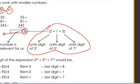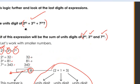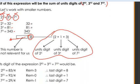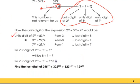Extending this logic to our expression, the units digit would be the sum of the units digits of 2 power 83, 3 power 92, and 7 power 29. Let us find the units digit of 2 power 83. We know that the units digit of powers of 2 has a cyclicity of 4. So dividing the power 83 by 4, our remainder is 3. Therefore the last digit of 2 power 83 is the last digit of 2 power 3, which is 8.